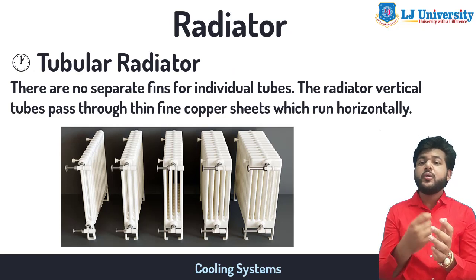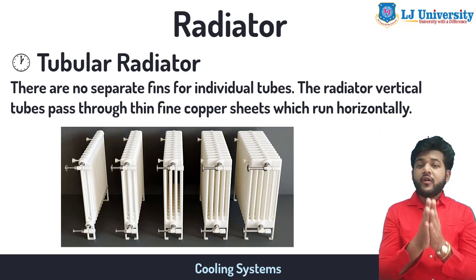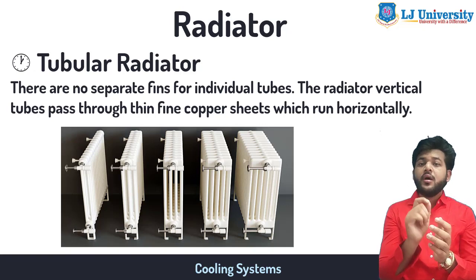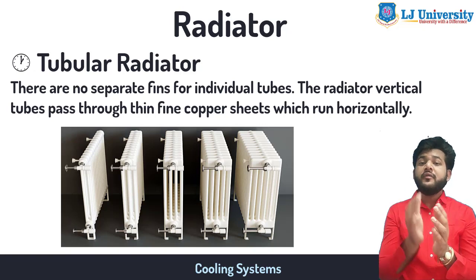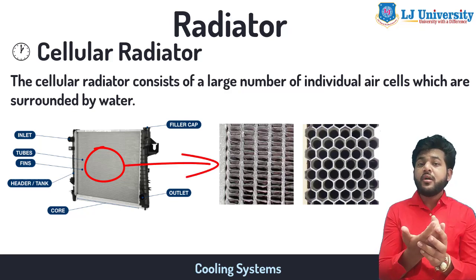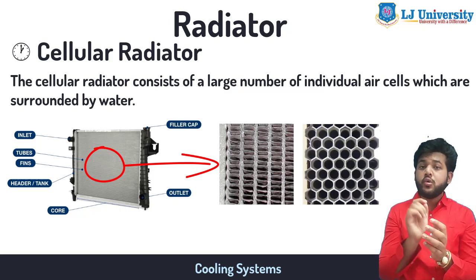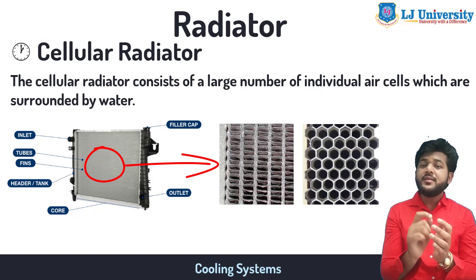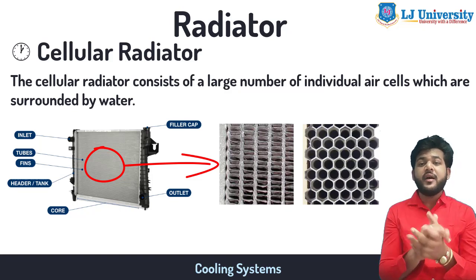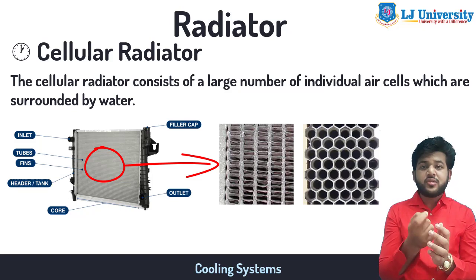The tubular radiator differs from the gilled tube in that there are no separate individual fins. The radiator's vertical tubes pass through thin copper fin sheets that run horizontally. The honeycomb or cellular radiator consists of a large number of individual air cells surrounded by water. In this design, the closing of any passage affects only that small part of the cooling system. However, in a tubular radiator, if one tube becomes blocked, the whole cooling system is affected.